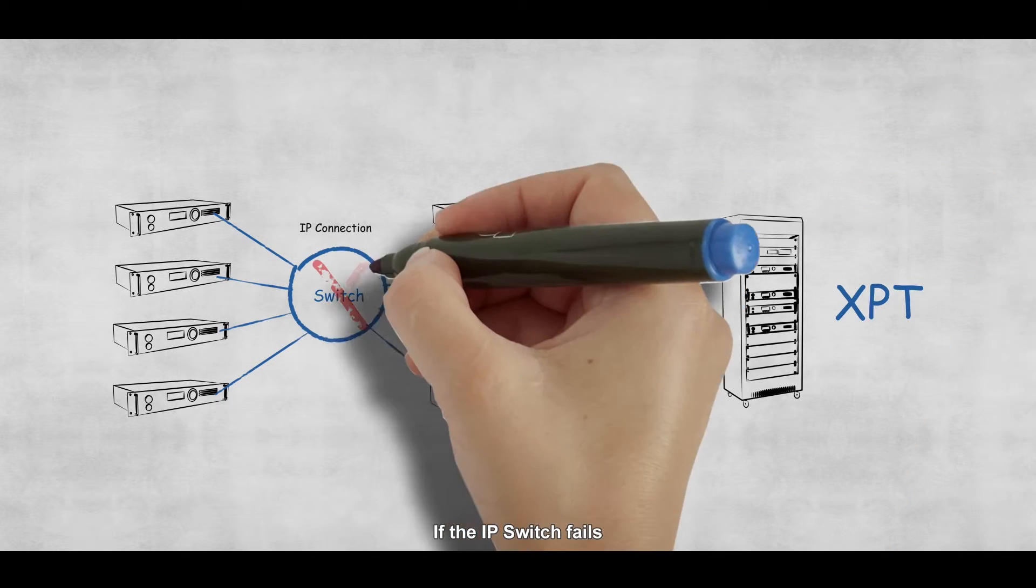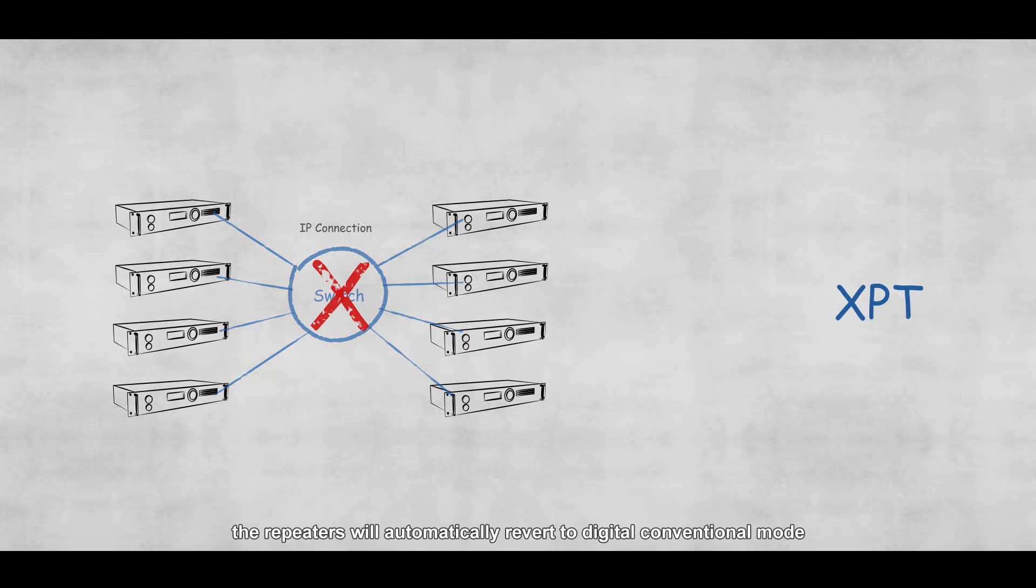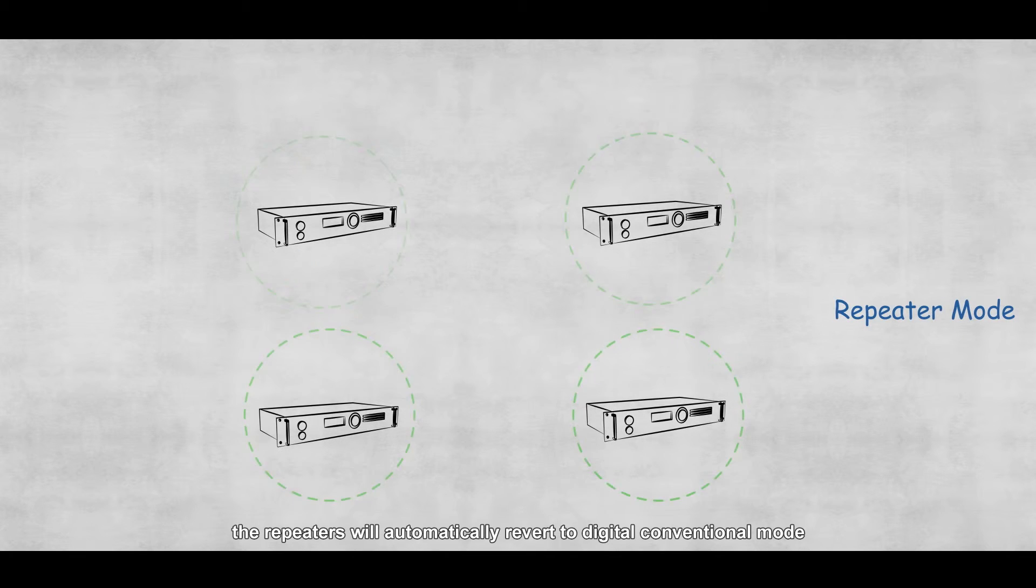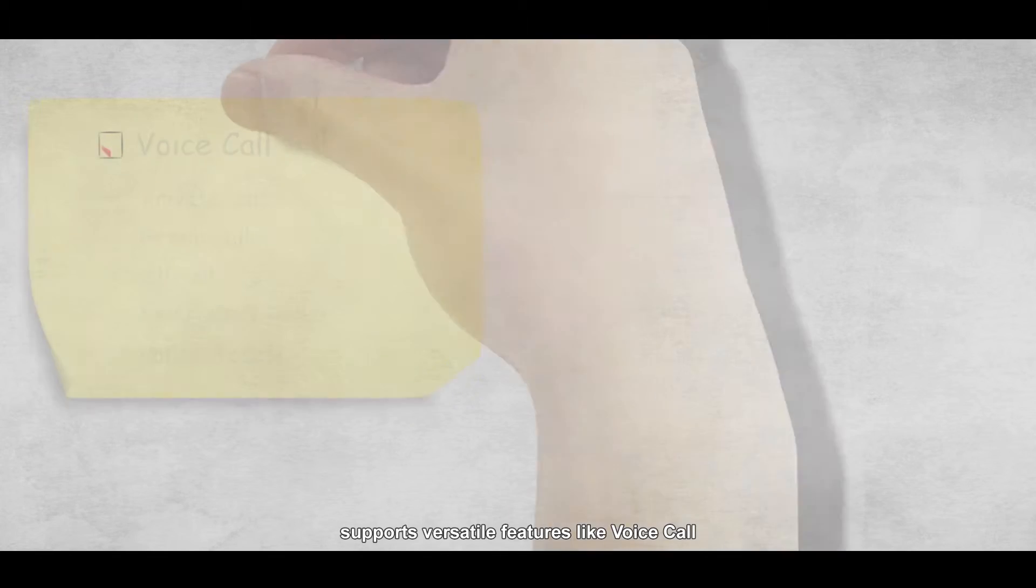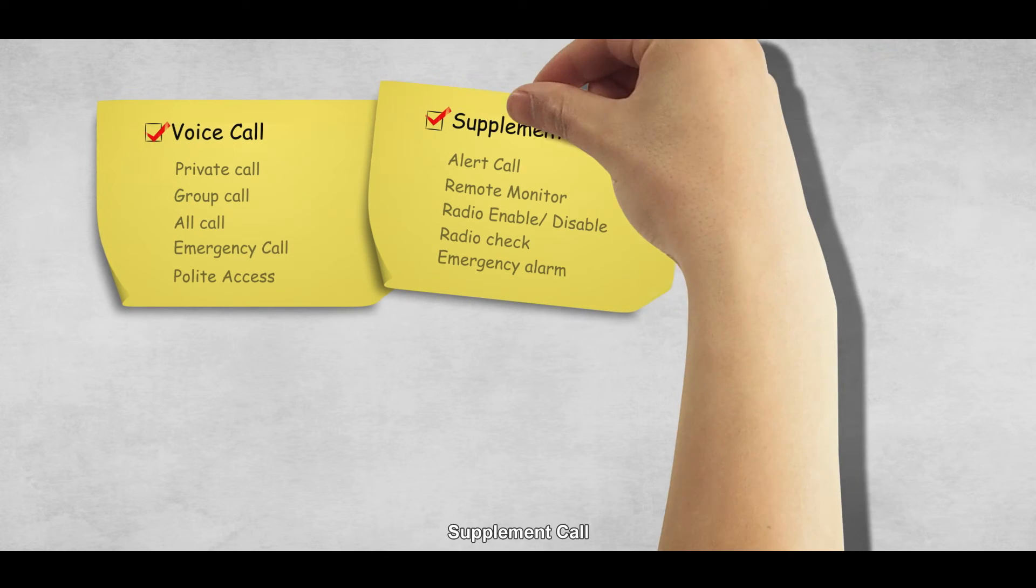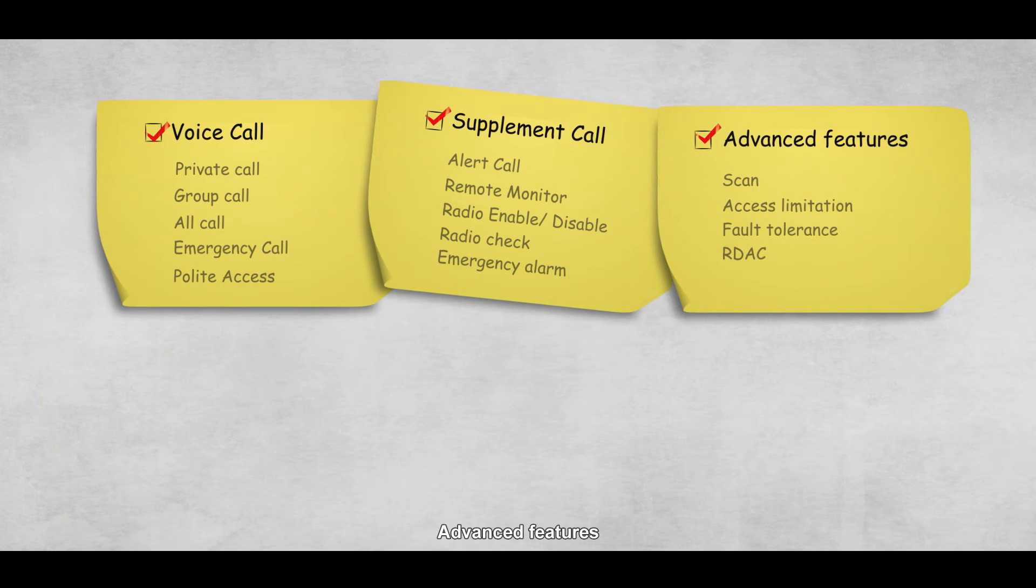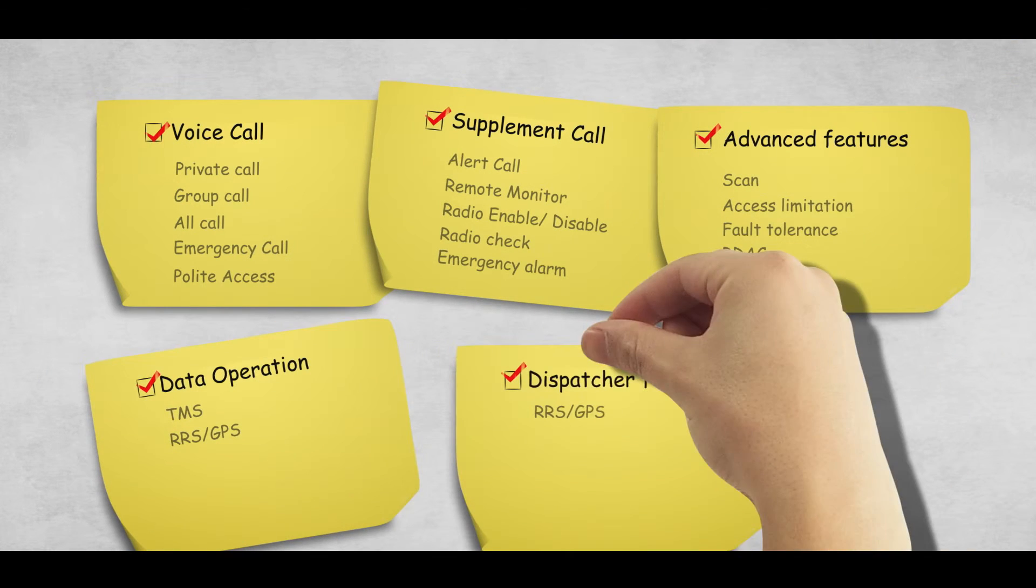If the IP switch fails, the repeaters will automatically revert to digital conventional mode. Hytera XPT digital trunking supports versatile features like voice call, supplement call, advanced features, data operation, dispatching.